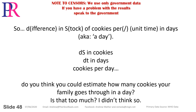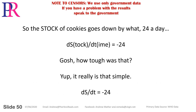D, difference in stock of cookies per unit time — in days, a.k.a. a day. DS in cookies, DT in days — cookies per day. Can you estimate how many cookies your family goes through in a day? The stock of cookies goes down by 24 a day. DS by DT equals minus 24. How tough was that? It really is that simple.